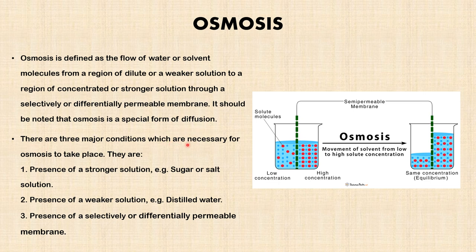There are three major conditions which are necessary for osmosis to take place. Number one: the presence of a stronger solution, that is a salt or sugar solution. Two: presence of a weaker solution, that is distilled water. Three: presence of a selectively or differentially permeable membrane. This picture describes the process of osmosis.